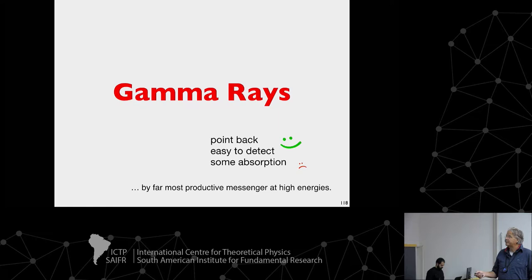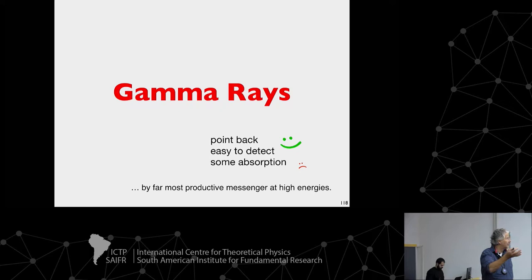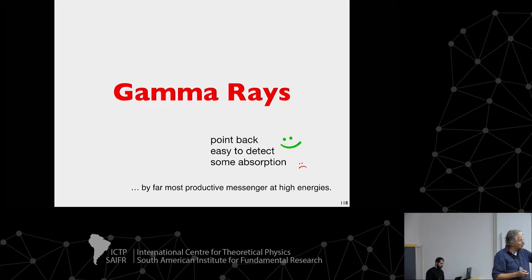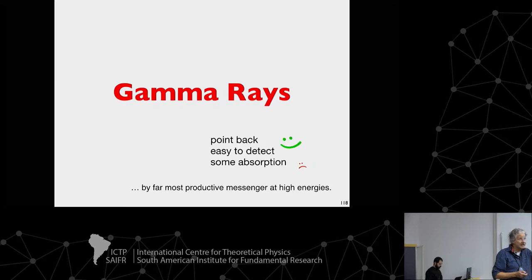For the highest energies, we do have some absorption, so they can't travel from the end of the universe to us, but this is a minor problem. It has turned out that gamma rays are the most productive messengers in astroparticle physics. In the last 20 years, almost everything we learned about cosmic rays and the origin of cosmic rays has been learned by gamma rays, because you can identify the sources — a supernova remnant or a pulsar — that produce high-energy particles. For cosmic rays, as I explained yesterday, this is much more difficult.